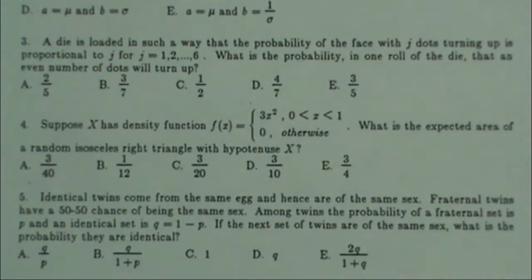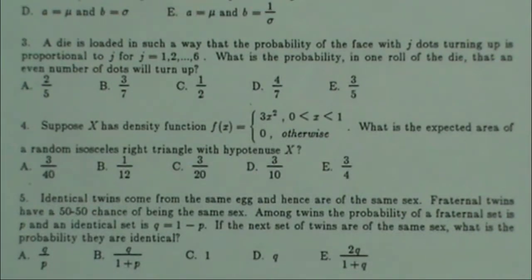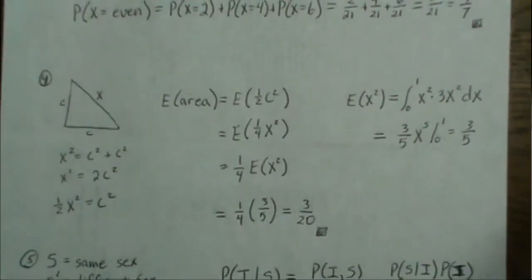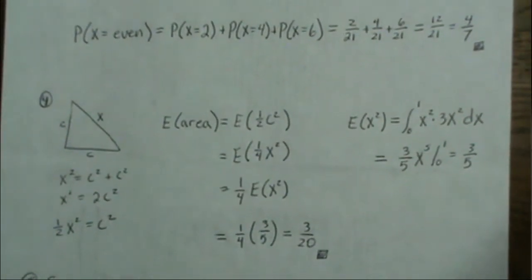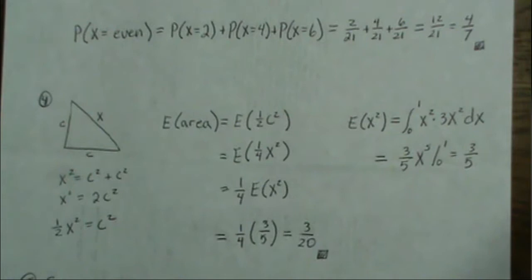Number four: suppose X has a density function f(x) equal to three x squared. What is the expected area of a random isosceles right triangle with hypotenuse X? In problem number four, we're given the density f(x) = 3x² and we want to find the expected area of a random isosceles right triangle with hypotenuse X.